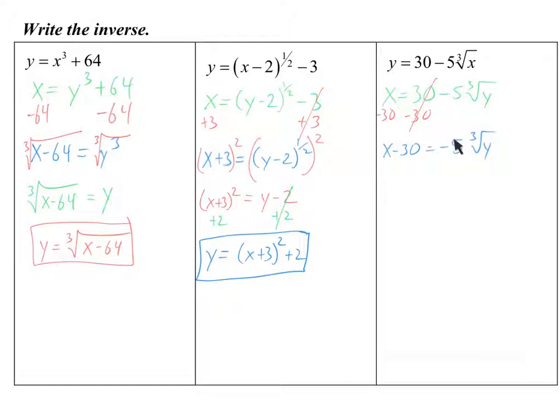Now, I've got to get rid of this negative 5 in front of the cube root of y. So you get rid of that. It's multiplied on. So to get rid of it, you divide it off. So that would cancel it off. So that leaves me with x minus 30 over negative 5 equals the cube root of y.